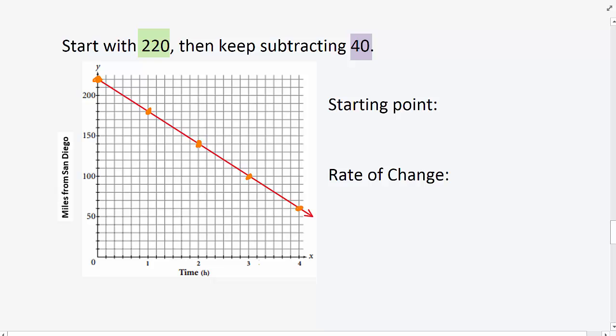The graph has a starting point of 0, 220 and a rate of change of negative 40.